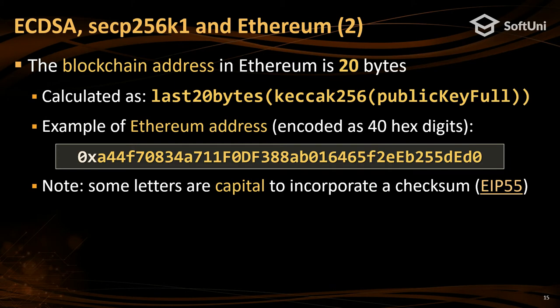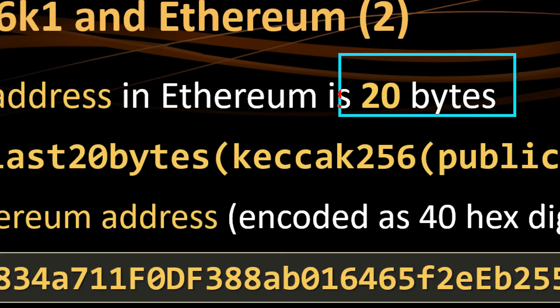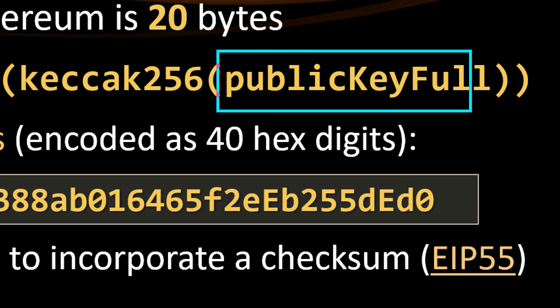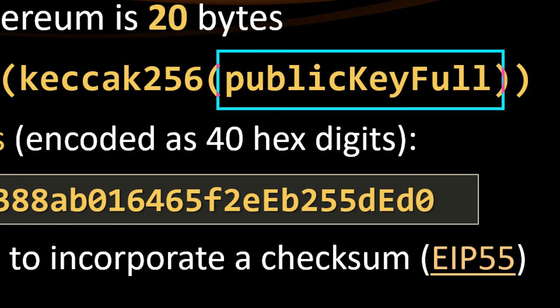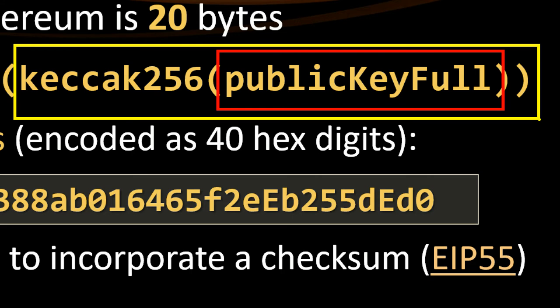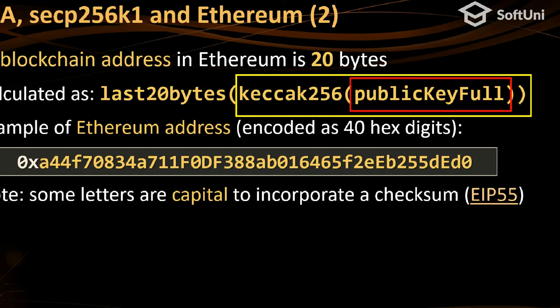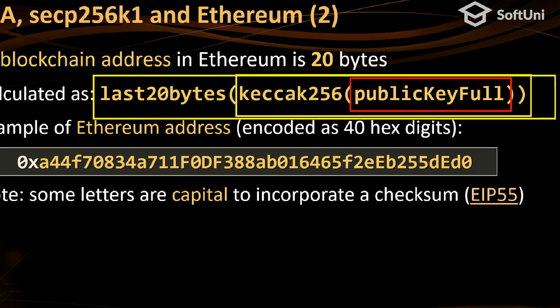The next thing is digital signatures and blockchain addresses. How are blockchain addresses derived? In Ethereum, addresses are 20 bytes. We take the private key, extract the uncompressed 64-byte public key, and hash it using Keccak-256 — which is in fact SHA-3 with some small modifications — then take the last 20 bytes. This means if you generate a random private key and I generate another, it can happen that we have a collision and the same blockchain address. It might happen that you have the same wallet as someone else and could spend their money.